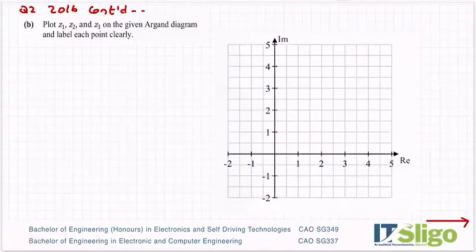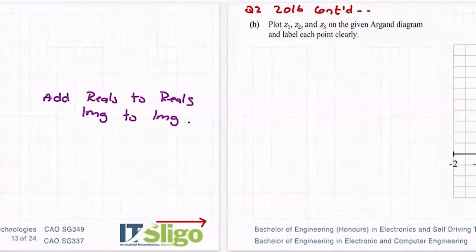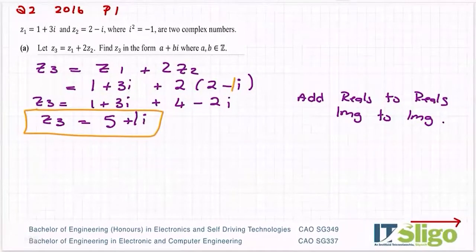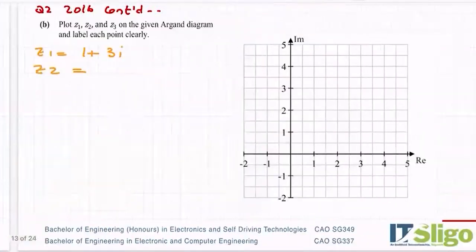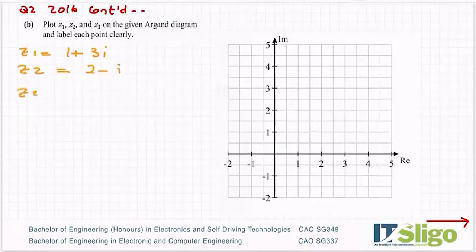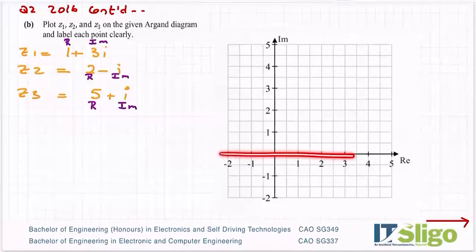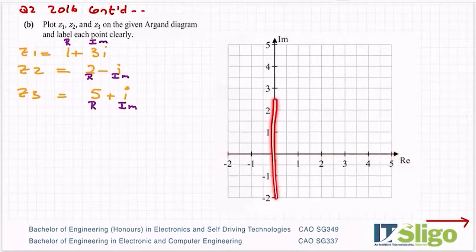Part B then said plot these on an Argand diagram. So I have Z1 is equal to 1 plus 3i, Z2 was equal to 2 minus i, and we just found Z3 being equal to 5 plus i. That's the real part and that's the imaginary part. This is my real axis, this is my imaginary axis.